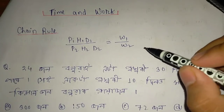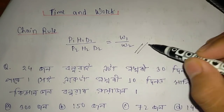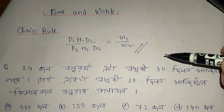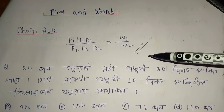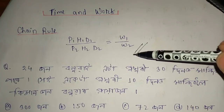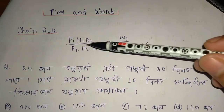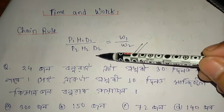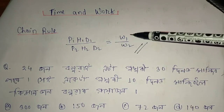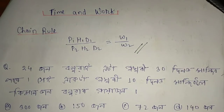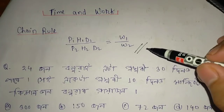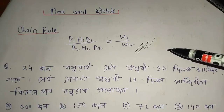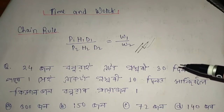Let's look at the chain rule. Time and work are different types of questions. This is the chain rule. If you want to use the chain rule, P1H1D1 divided by P2H2D2 is equal to W1 by W2. I will explain this to you with a question.